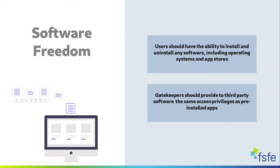Blocking end users' freedom to install, run, and uninstall software on their devices is a central source of gatekeepers' control. Although gatekeepers may argue that installing third-party software could be potentially harmful to users due to security, data integrity, and privacy concerns, in fact commercial interests are the main drive to lock users in. Regaining control over devices requires safeguarding software freedom — users should have the ability to install and uninstall any software, including operating systems and app stores. Besides, gatekeepers should provide to third-party software the same access privileges as the pre-installed ones.